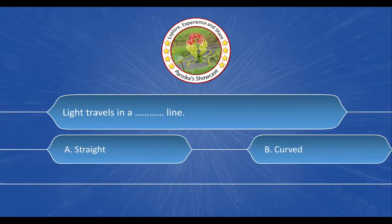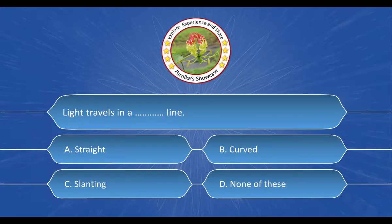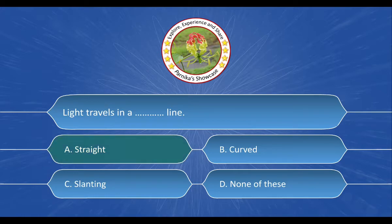Next question: Light travels in a ___ line. And the options are: A. Straight. And the correct answer is option A. Straight.